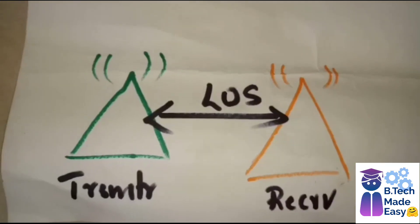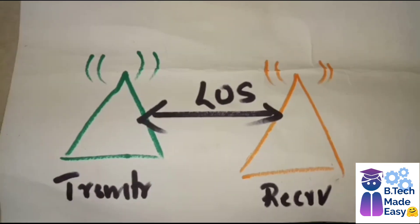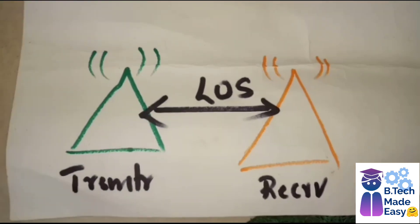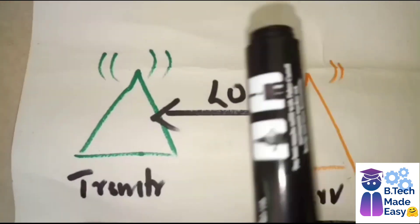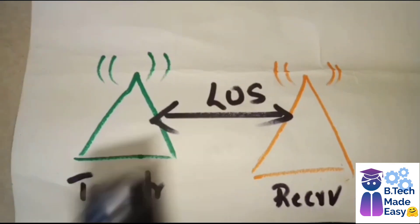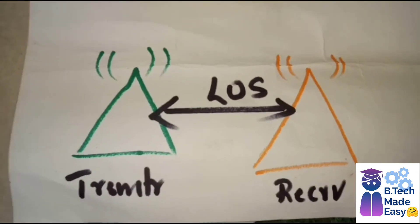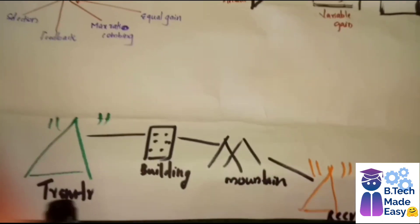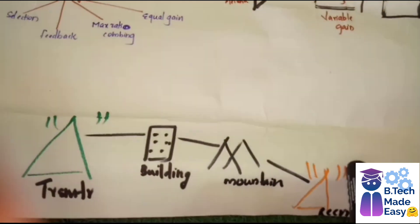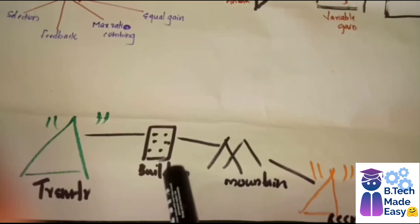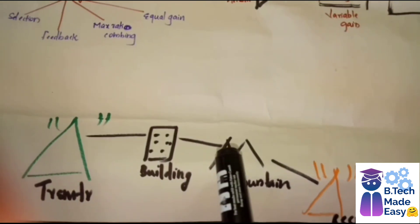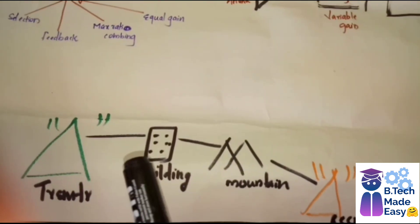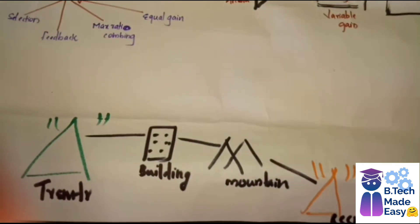So we have to discuss about what is fading. Here we can see a transmitter and a receiver. When the transmitter and receiver are both in line of sight, there is no chance of fading. But when there is a building or obstruction between the transmitter and receiver, multipath occurs and fading results.